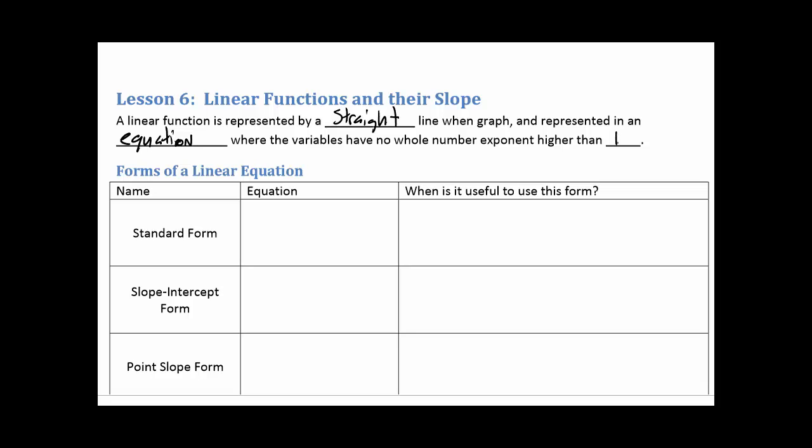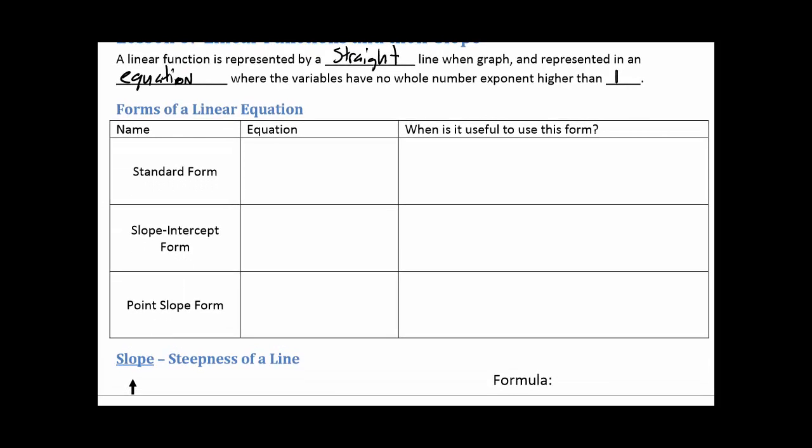So basically we're dealing with things that have two variables in it, or can have one variable, but we're looking at x's and y's for variables. And we've got exponents that are no bigger than 1.